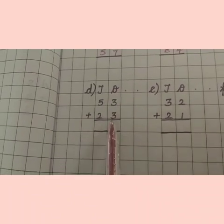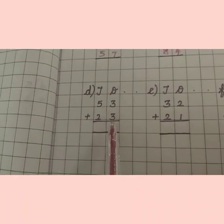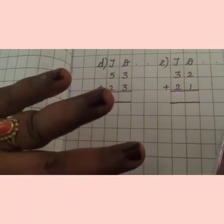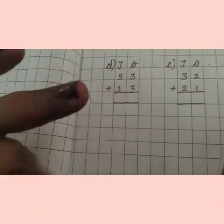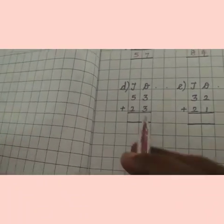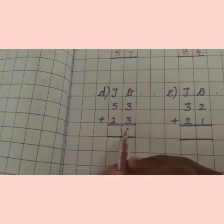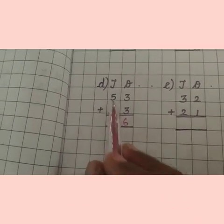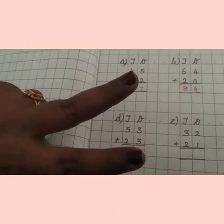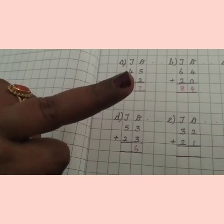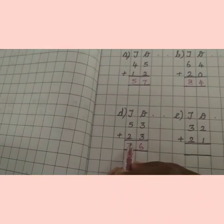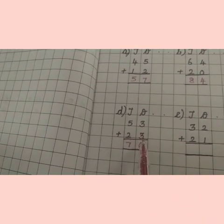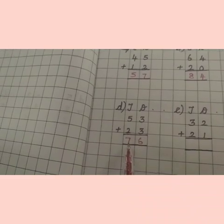Next one: 53 plus 23. We have to add the ones place first. Three plus three — three in the mind, three in the finger — after three: four, five, six. Answer is six. Tens place: five plus two — five in the mind, two in the finger — after five: six, seven. Answer is seven.